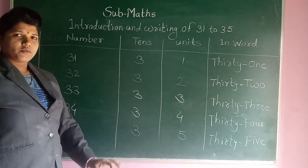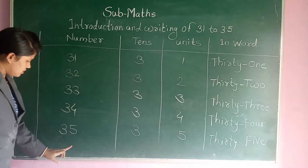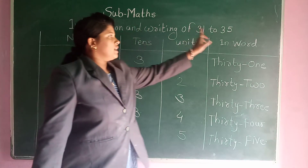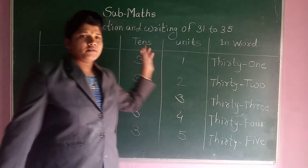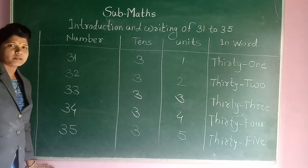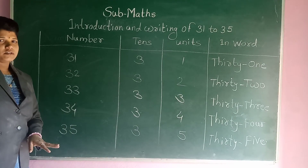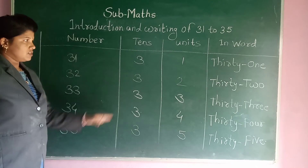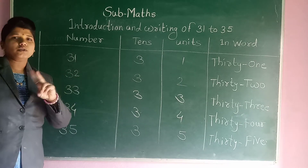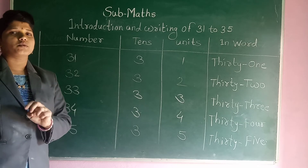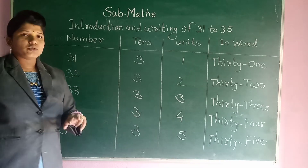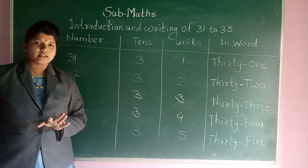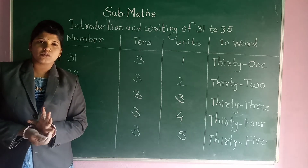Okay, all of you understood 31 to 35 — write the tens, unit, and in words of 31 to 35 numbers. I hope all of you better understood this chart. Copy this chart into your notebook. Thank you students, thank you for watching this video.